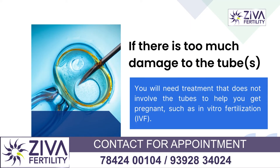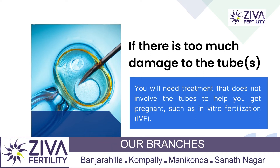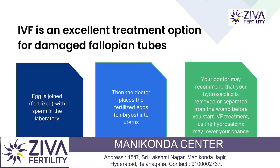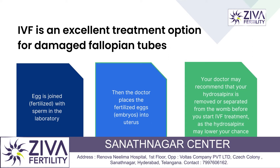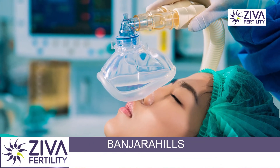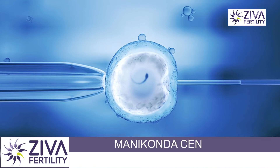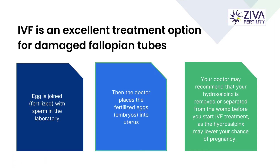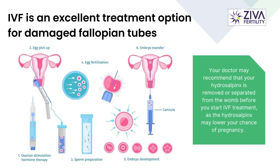But if there is too much damage and a tube had to be removed, and both tubes are blocked, the option left is IVF. In IVF, eggs are stimulated inside the ovaries, retrieved under anesthesia in a simple procedure, mixed with the partner's sperm, embryos are created, and a few good embryos are placed back into the uterus. The tubes are not needed in this process, and pregnancy can be achieved depending on age and other factors which determine the success rate.